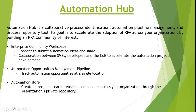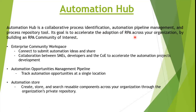Automation Hub also lets us calculate the ROI so we can see a bigger picture of how much impact a particular automation brings. It is defined as a Collaborative Process Identification, Automation Pipeline Management, and Process Repository Tool. Its goal is to accelerate the adoption of RPA across your organization by building an RPA community of interest. A common question is whether this product is actually useful and how we can leverage it.